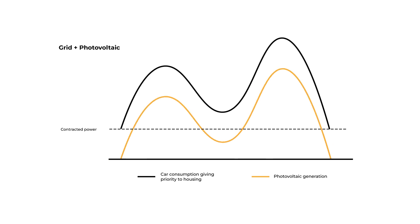Grid plus photovoltaic: this mode is also known as maximum power, so each charger supplies all the available photovoltaic power plus the subscribed power, enabling maximum charging speed to be reached.